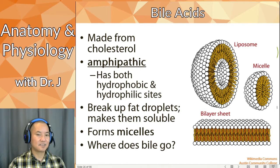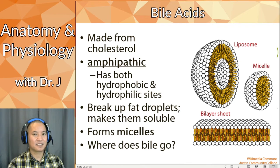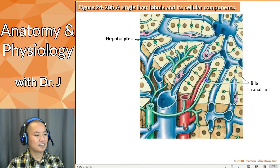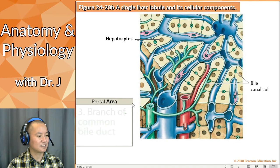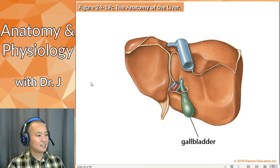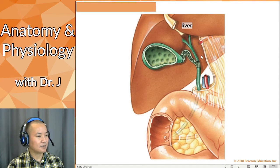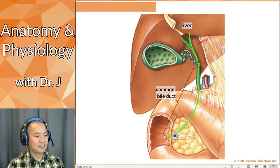Bile acids are obviously a big component of bile. Bile goes from bile canaliculi — very small canals — that connect to bile ducts. This common bile duct collects all the bile acids and bile produced by your liver and puts them down a common duct to the duodenum.